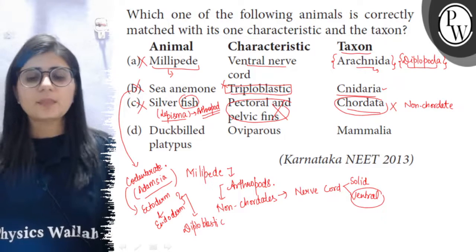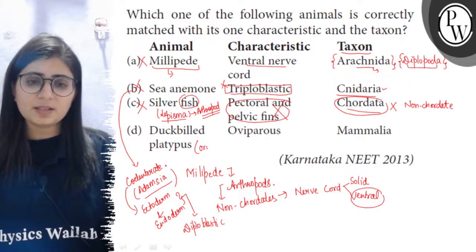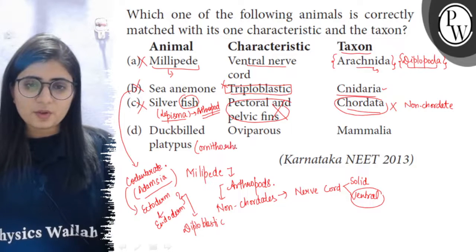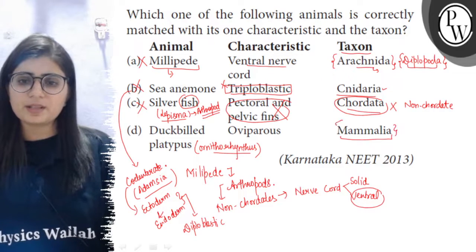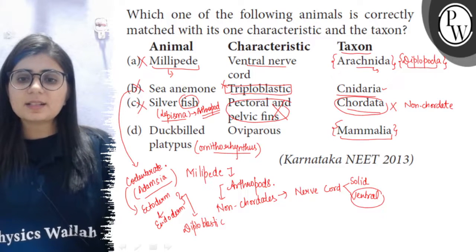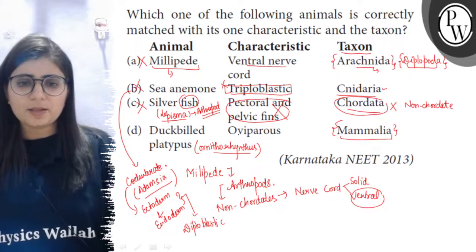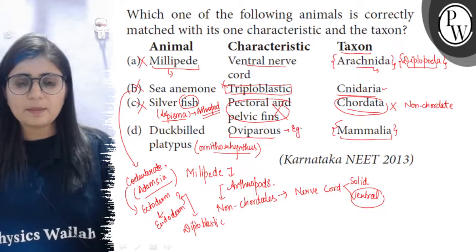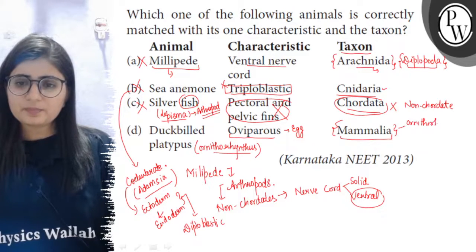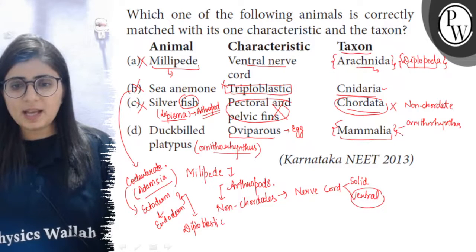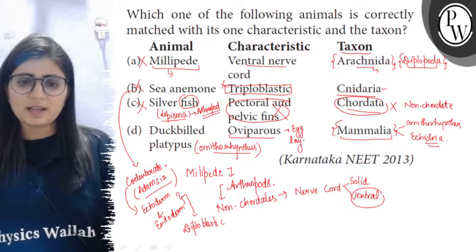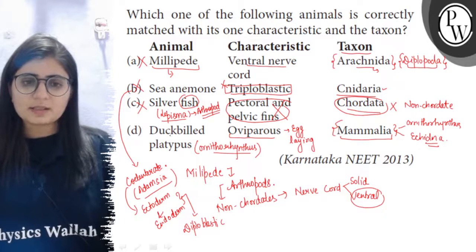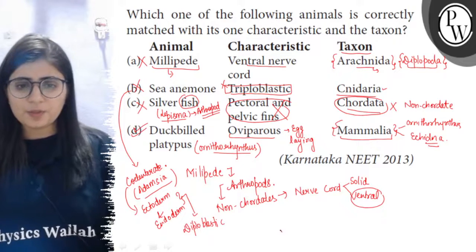The last option is the duck-billed platypus, with scientific name Ornithorhynchus. It is a mammal and belongs to class Mammalia because of the presence of mammary glands. It is also an example of an egg-laying mammal. There are only two oviparous mammals: the duck-billed platypus (Ornithorhynchus) and the echidna. So all three columns — animal, characteristic, and taxon — are correct for this option. Therefore, option D is the correct answer.